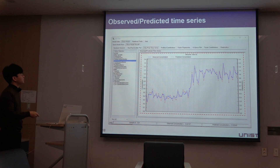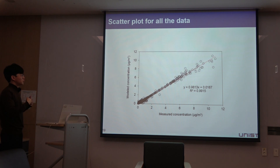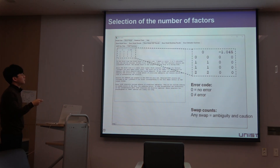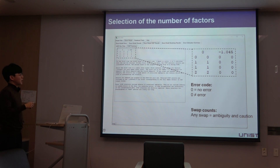Finally, we can get a figure comparing measured and modeled concentration, which I will use to show data reliability. As a final checkpoint, after running the PMF model, you can focus on the first value, which is the error code. If it is zero, there is no error. If it is not zero, you have to run the PMF model again. Also, the first line shows swap counts — if there is any swap, it means ambiguity and rotation issues are present, so you have to run the PMF model again.